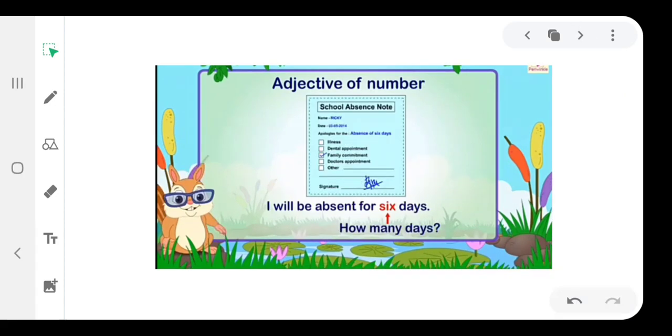Adjective of number. Adjective of number answers the question 'How many?' For example, I will be absent for six days. Six answers the question 'How many days?'